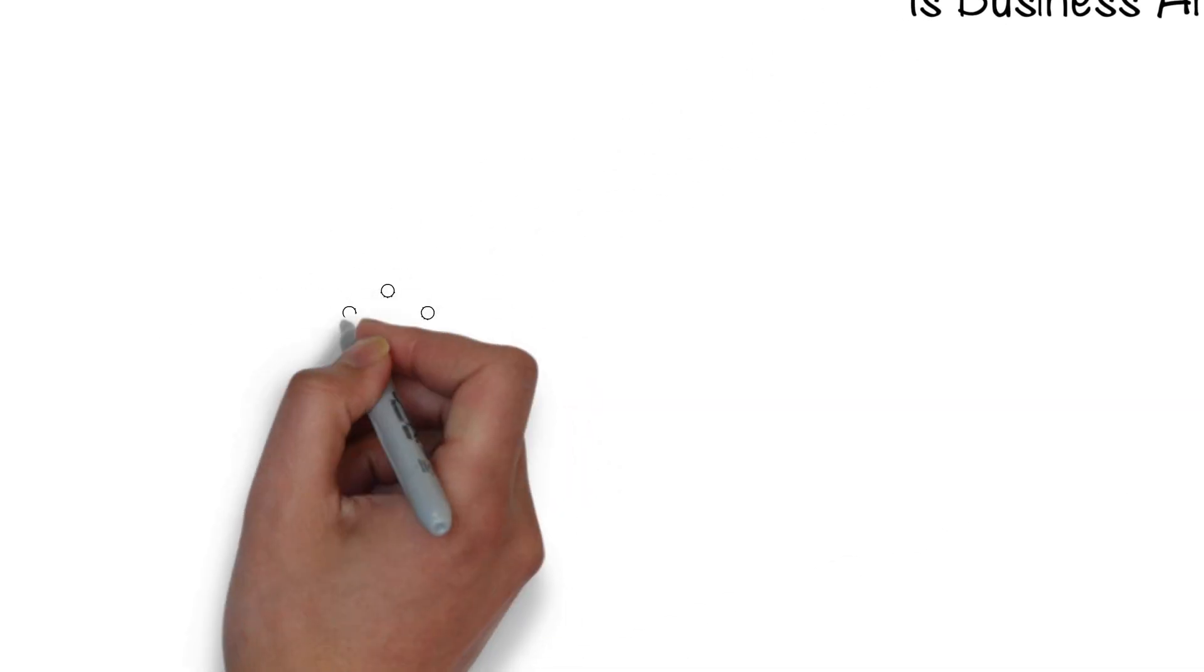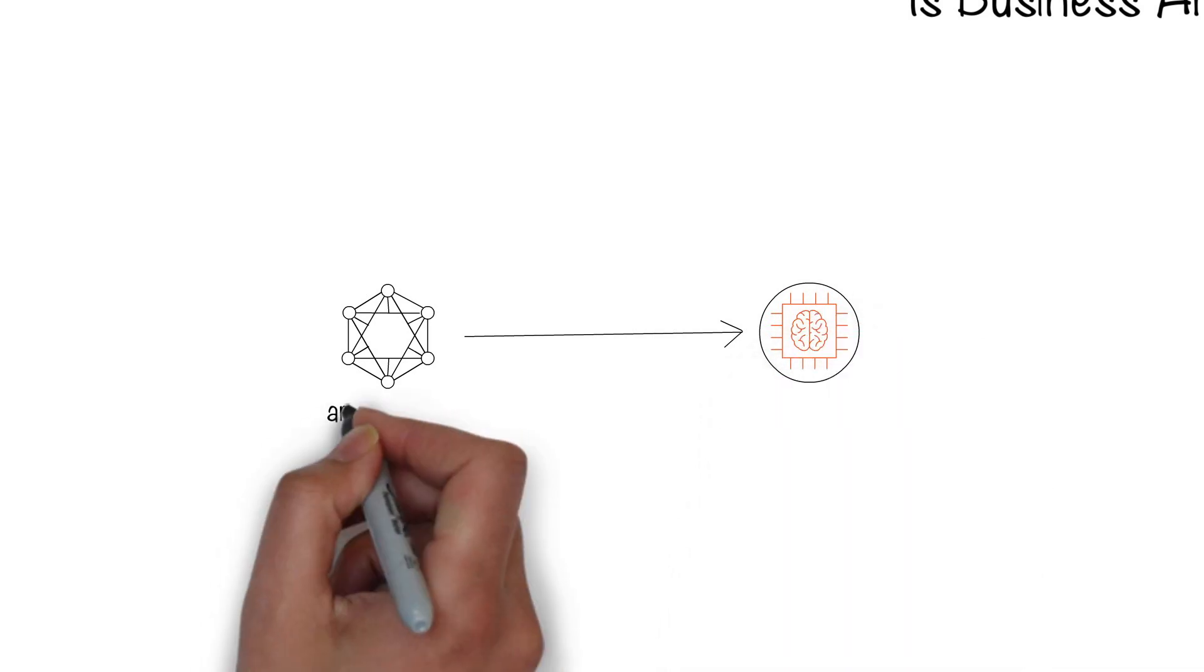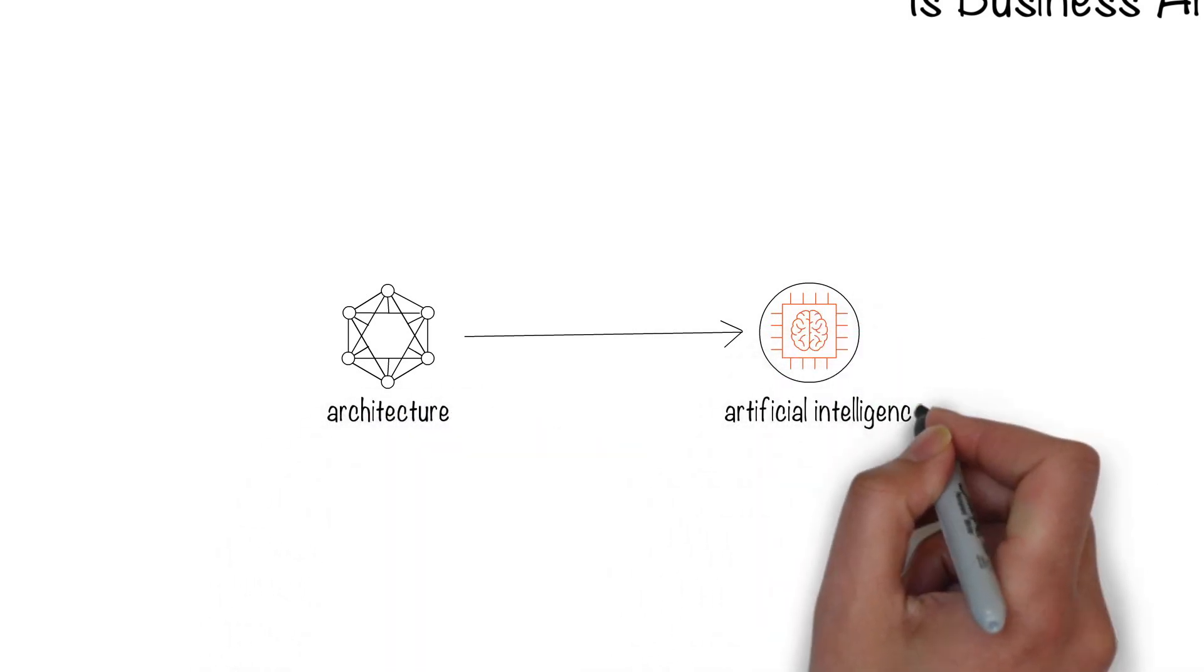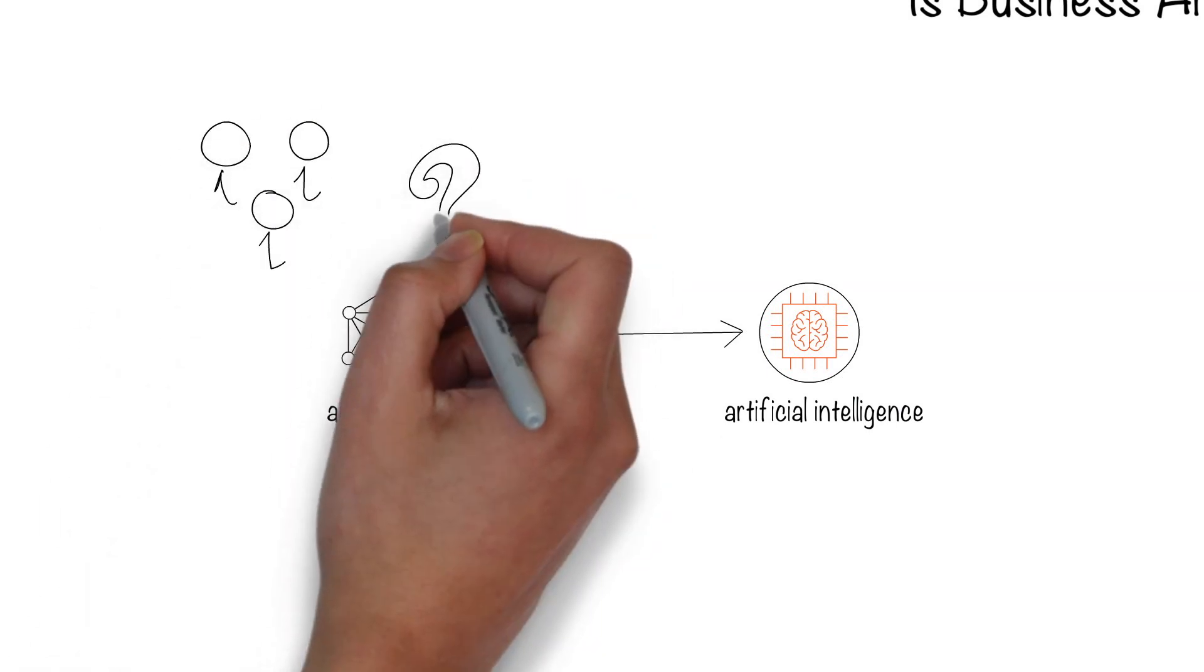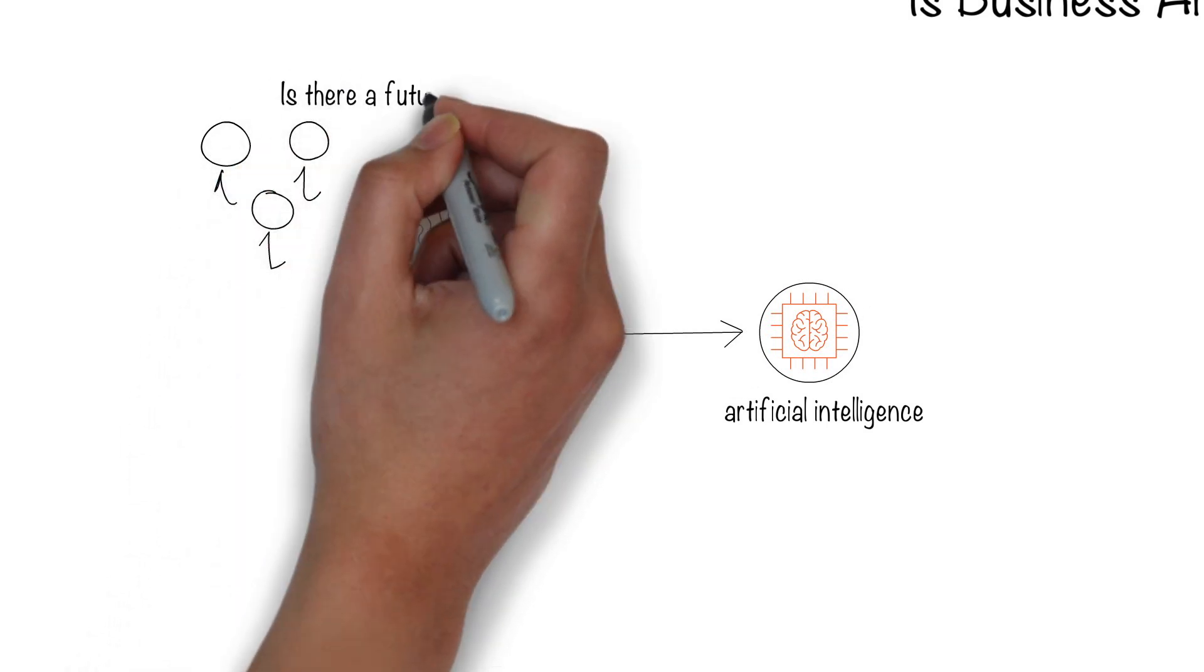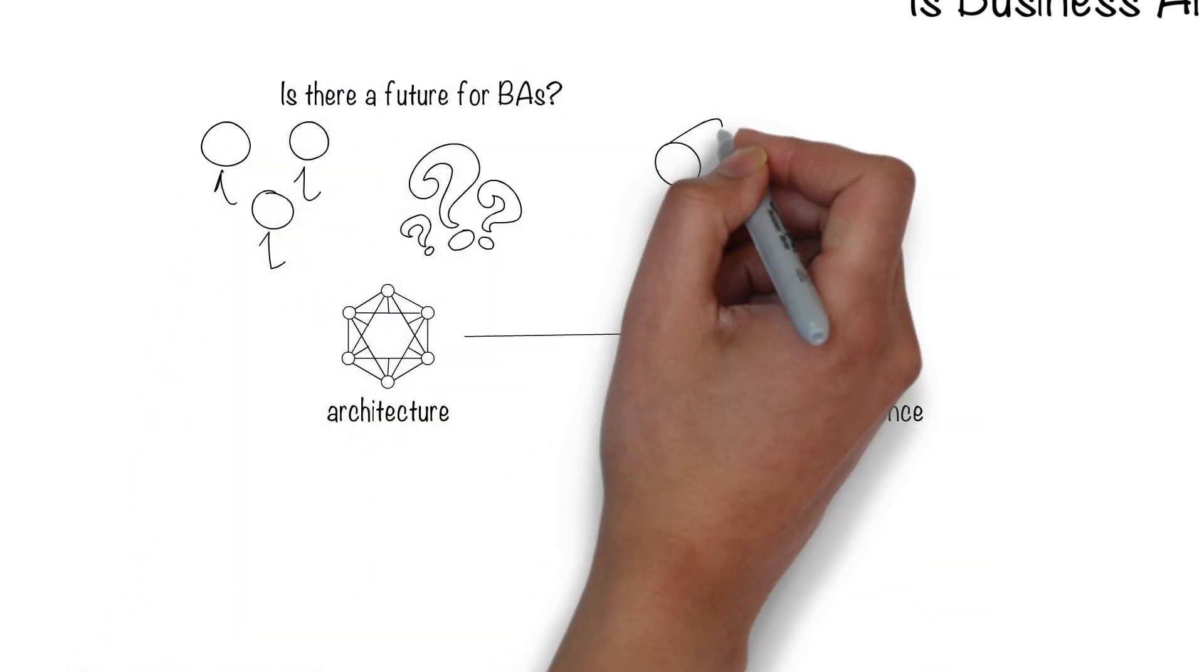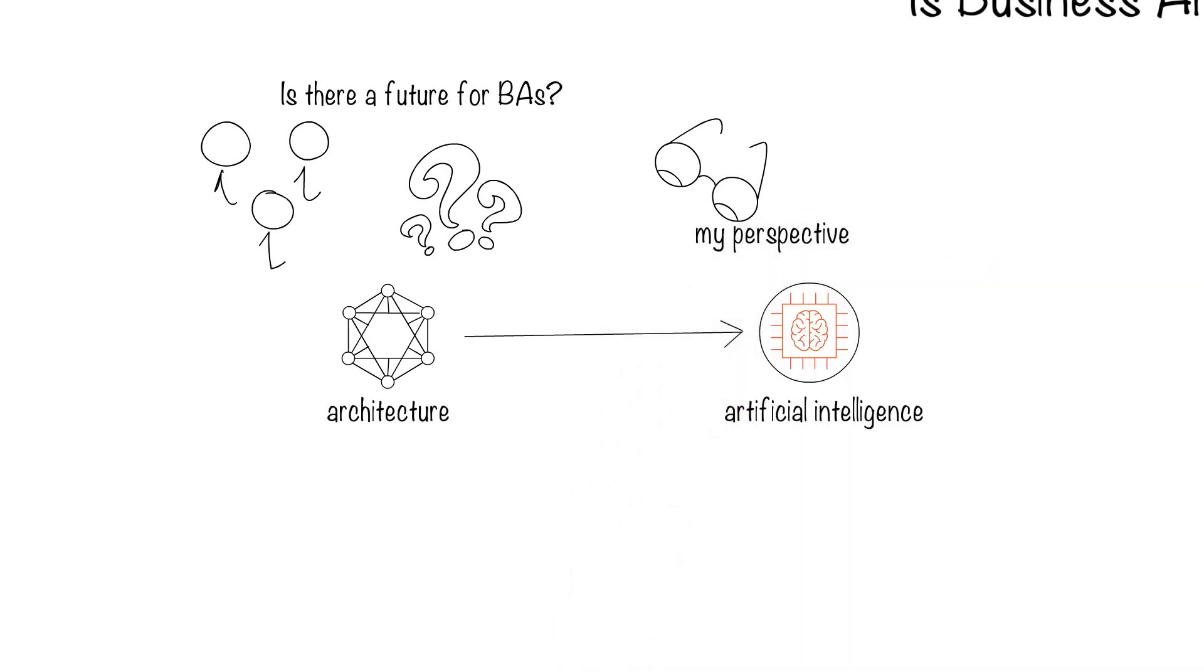Lots of people have been asking me whether I moved away from business architecture since I've been sharing a lot of information on the topic of artificial intelligence. More importantly, current and aspiring business architects want to know if there is a future in business architecture at all. So I thought I'd share my own perspective on why I'm doing what I'm doing.